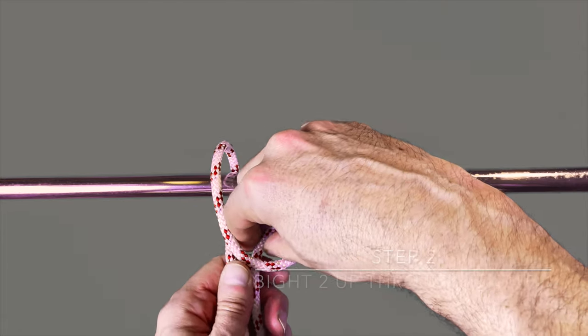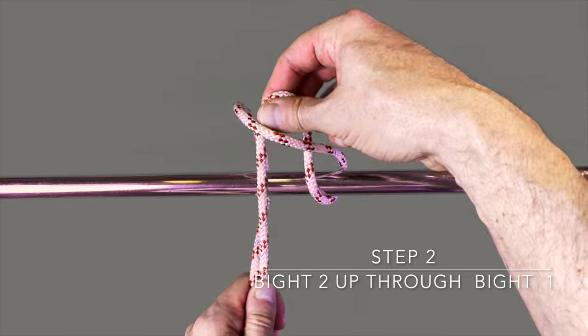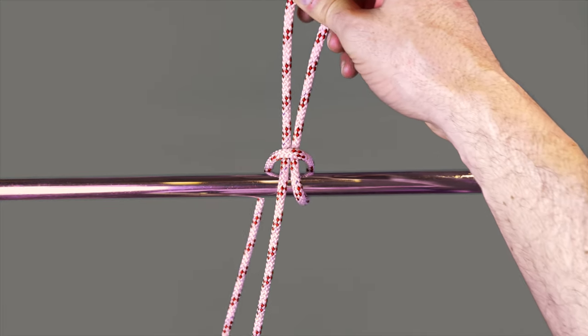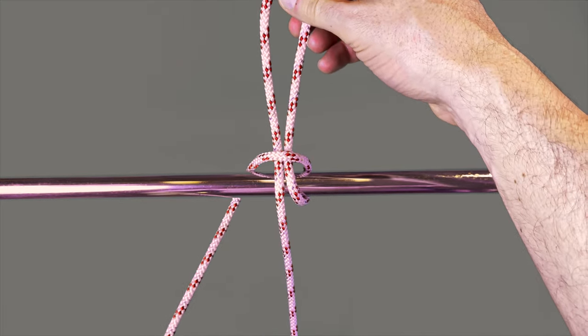Step two: you want to take your hand through the bight, grabbing the standing end, then pulling it back up through to create a second bight.